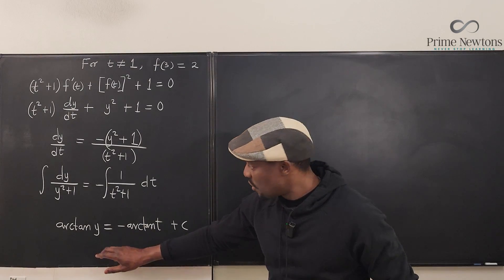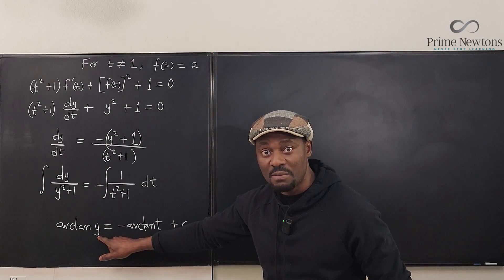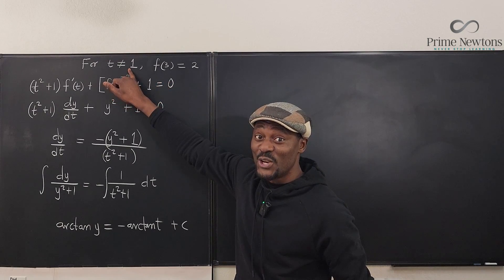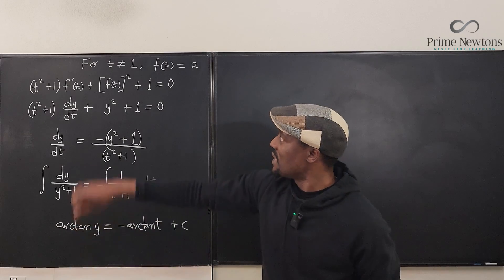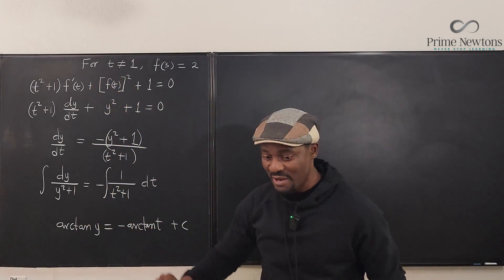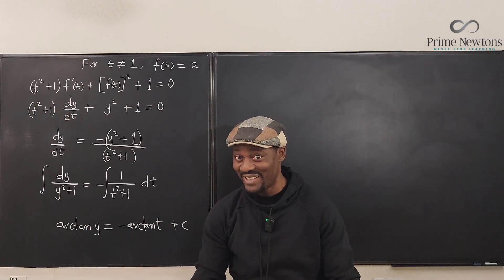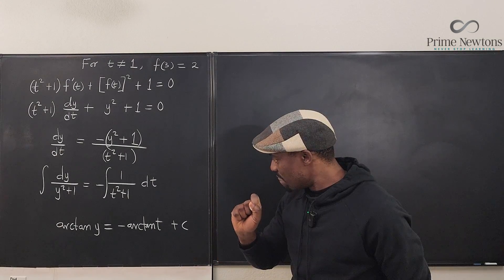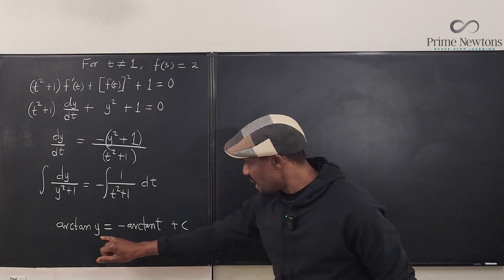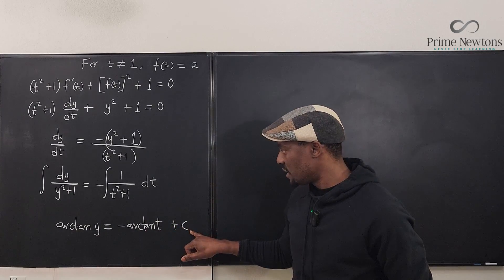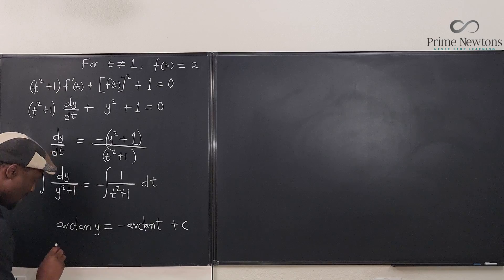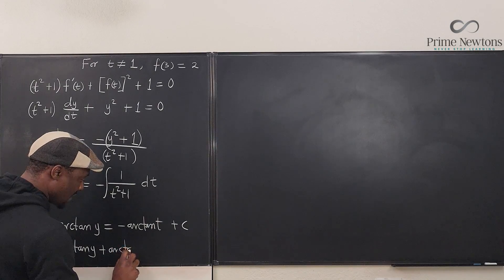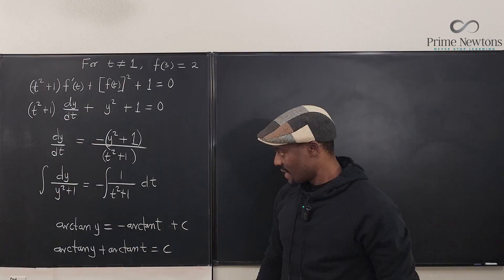That could be a final answer, but we need to find y explicitly because that's the purpose — and they've given us initial conditions. Also, this confirms we're looking for a rational expression: they tell us t ≠ 1, which means there will be a (t − 1) in the denominator. Rearranging: arctan(y) + arctan(t) = C.